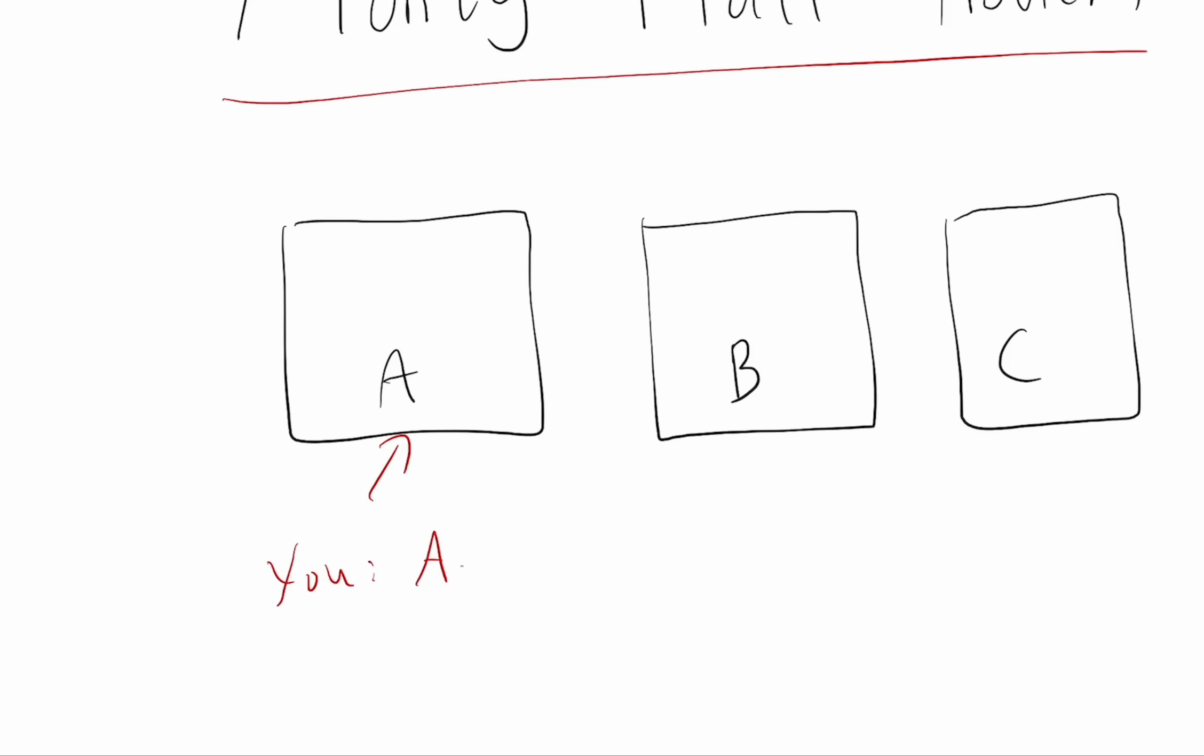And first of all, the reason this is guaranteed possible is because if you picked the right door, if the million dollars was really behind A, then it doesn't matter which door the host opens, because neither of them have the million dollars.